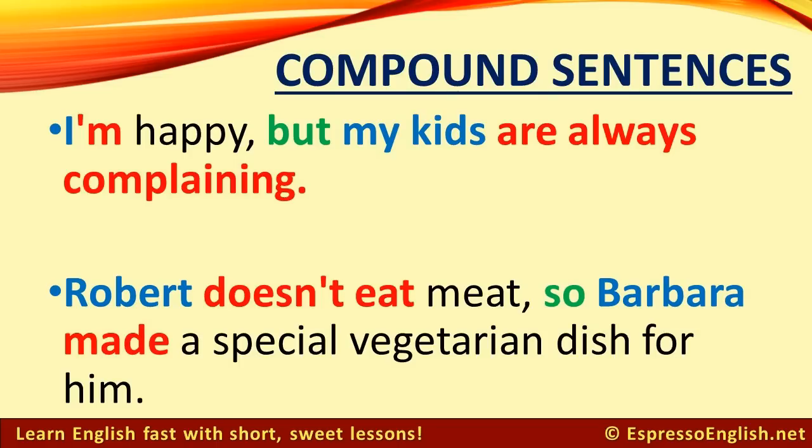I'm happy, but my kids are always complaining. You can see that we have two subjects in blue and two verbs in red, and the two independent clauses are linked by the word "but" — that's the linking word, shown in green. Here are more examples.